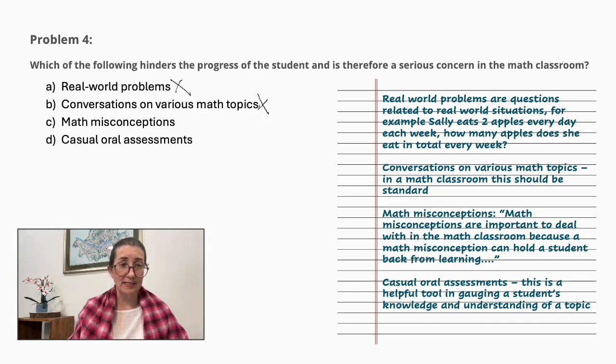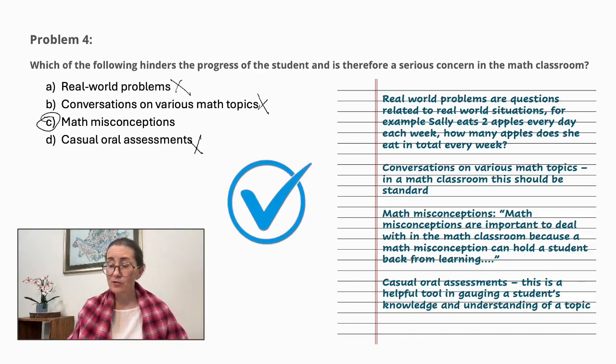I'm skipping C and going to D. Casual oral assessments. This is a helpful, if not essential, tool in gauging a student's knowledge and understanding of a topic. So that is certainly not a hindrance. Lastly, we look at math misconceptions. Math misconceptions are important to deal with in the math classroom because a math misconception can hold a student back from learning. So the hindrance here is C. Math misconceptions.